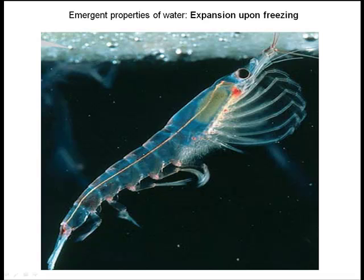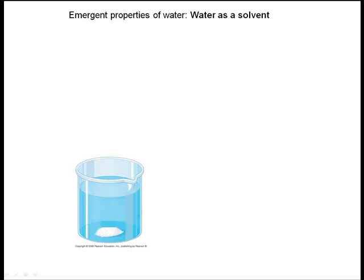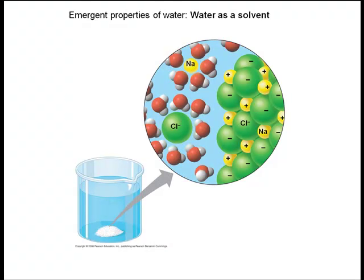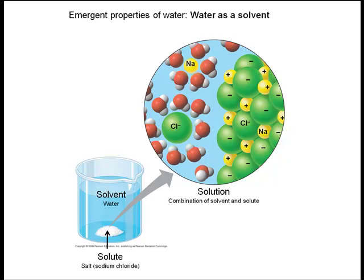The last property of water that we want to talk about is how water acts as a solvent. All that means is that when you put things into water, they dissolve. Now in these cases water will act as the solvent or the dissolving agent. If we put something like sodium chloride into the water, it is referred to as the solute or the thing that's being dissolved in the water. The combination of the solvent and the solute makes up a solution.